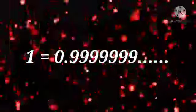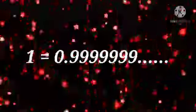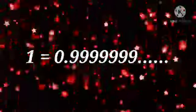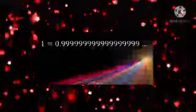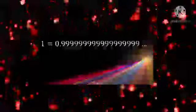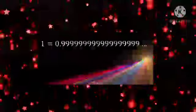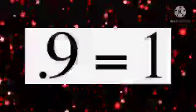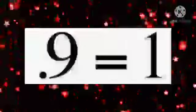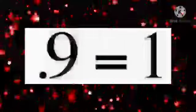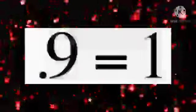1 is equal to 0.999 and so on. The simple equation, which states that the quantity 0.999 followed by an infinite string of nines is equivalent to 1, is the favorite of mathematicians. Stephen Strogatz of Cornell University: I love how simple it is. Everyone understands what it says.